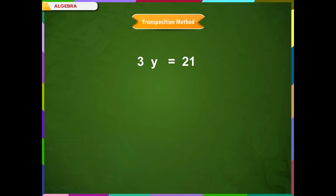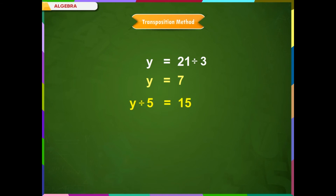For example, let us consider the equation 3y is equal to 21. Since we want only the variable y on the left side, we see that 3 is multiplied to y. When we transpose this 3 to the right side, it gets divided. Thus, we get y is equal to 7. Consider another equation: y divided by 5 equals 15. Since we want only the variable y on the left side, we see that 5 is dividing y. When we transpose this 5 to the right side, it gets multiplied. Thus, we get y is equal to 75.